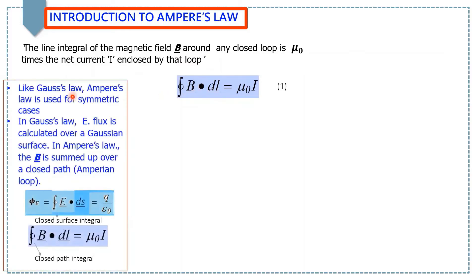Like Gauss's law, Ampere's law is used for symmetric cases. In Gauss's law, electric flux is calculated over a Gaussian surface. But in Ampere's law, the magnetic field is summed up over a closed path, which is also called the Amperian loop.